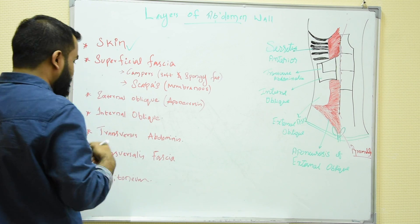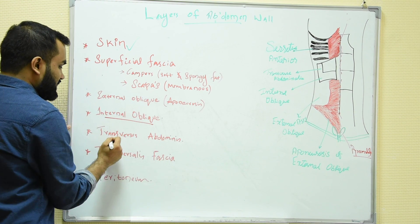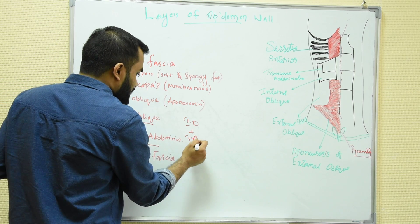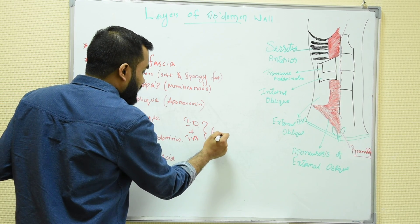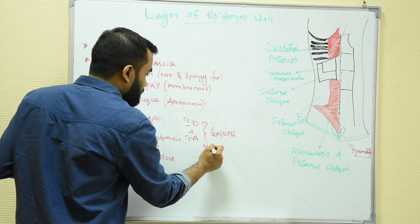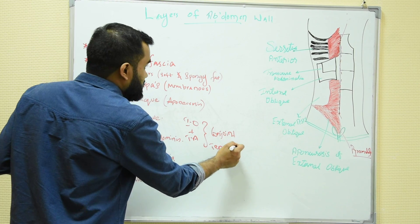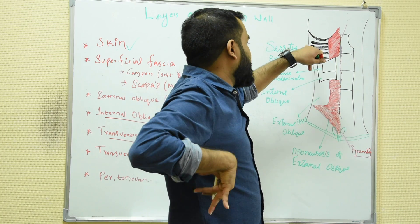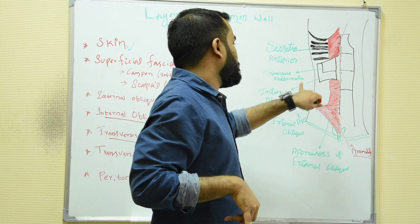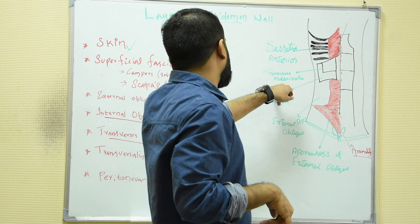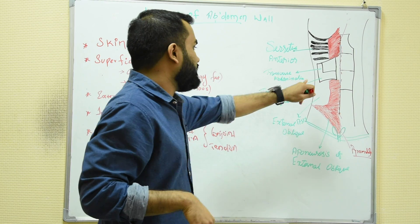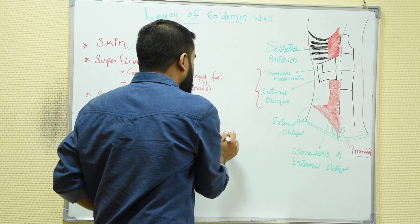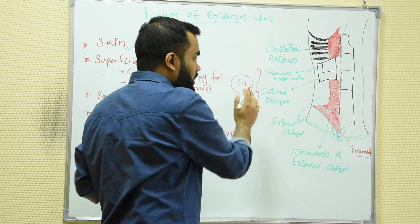Remember, there is a very important question here: internal oblique and transverse abdominis — that is IO plus TA — together are called the conjoint tendon. This is a very important MCQ. The main part is the aponeurosis part, and together they form the conjoint tendon.